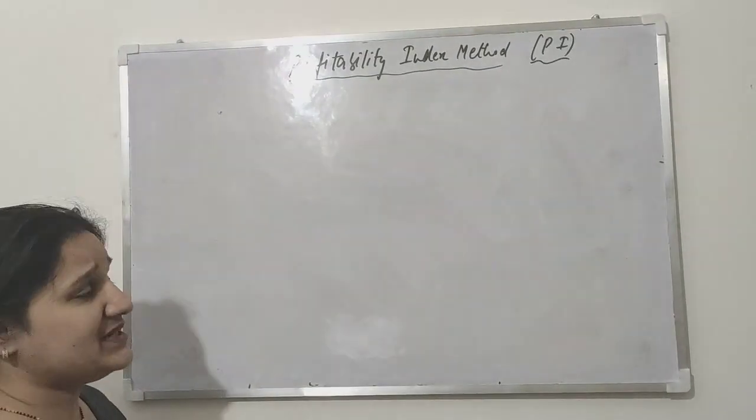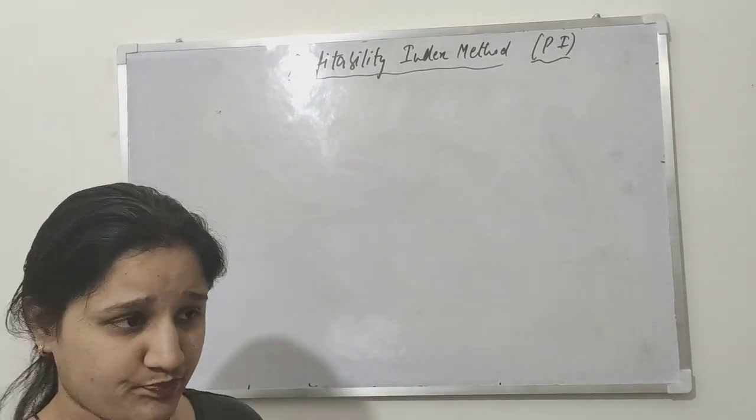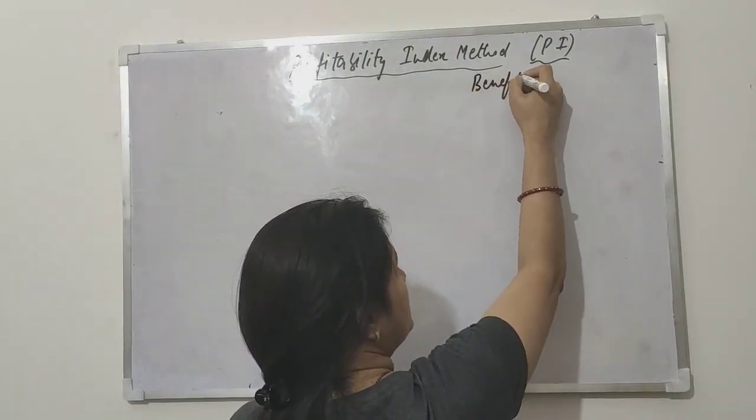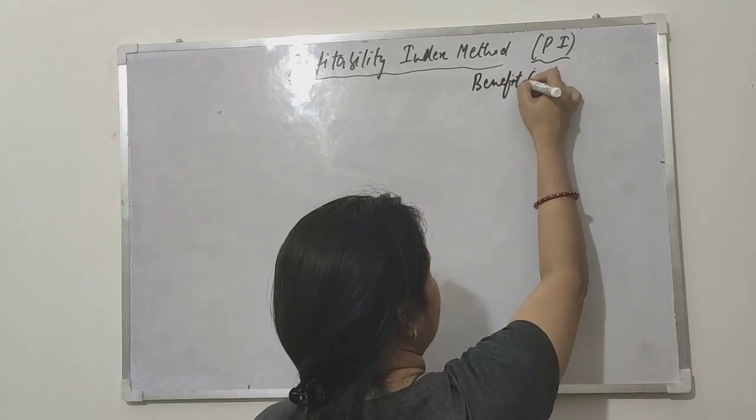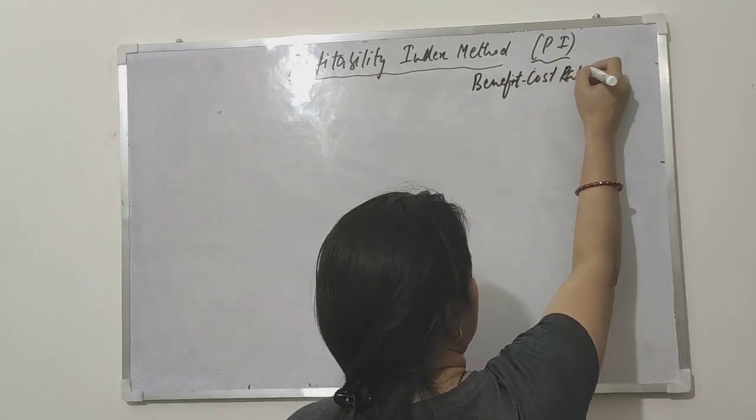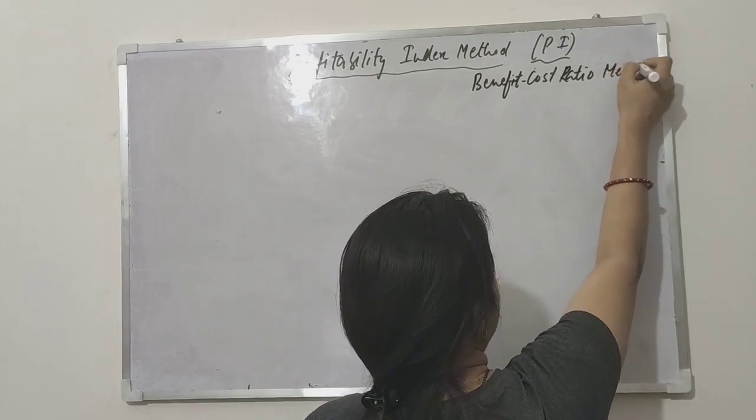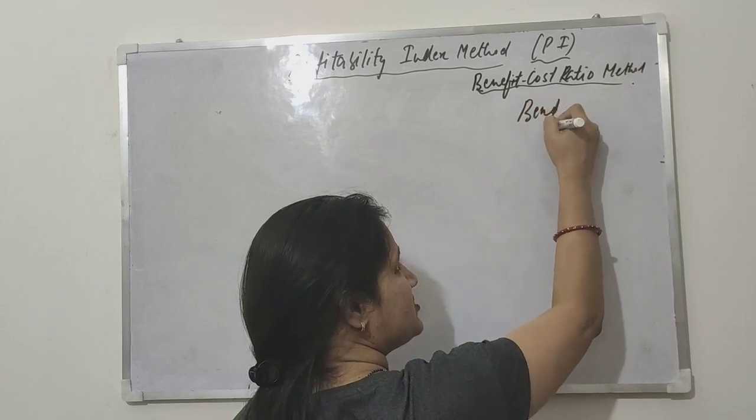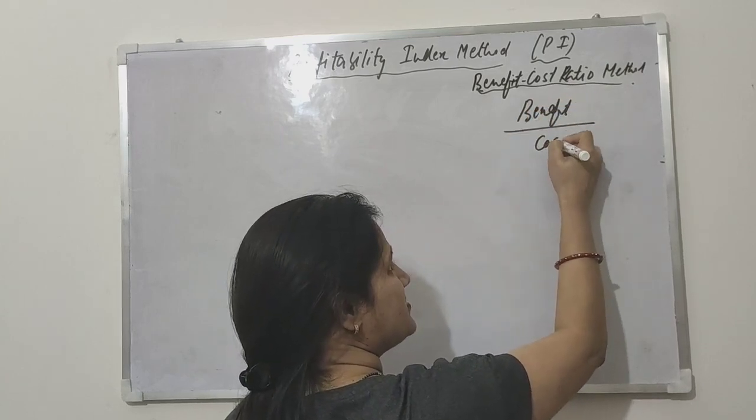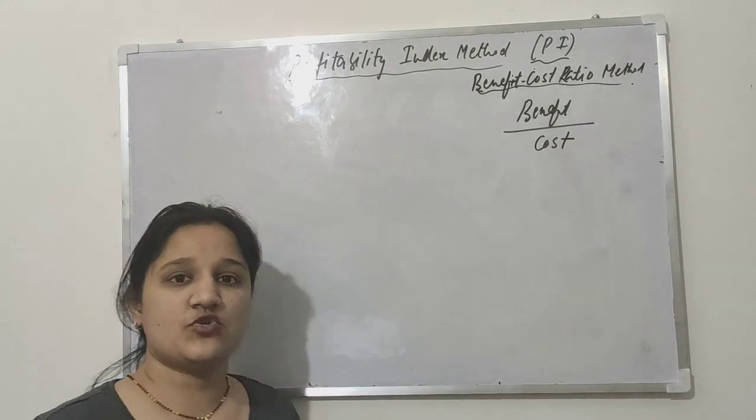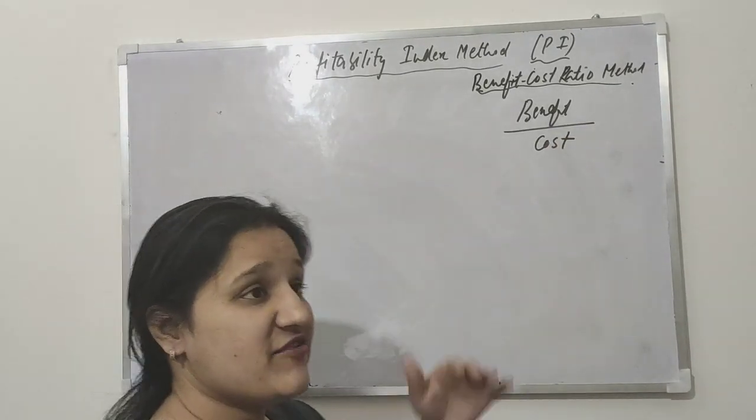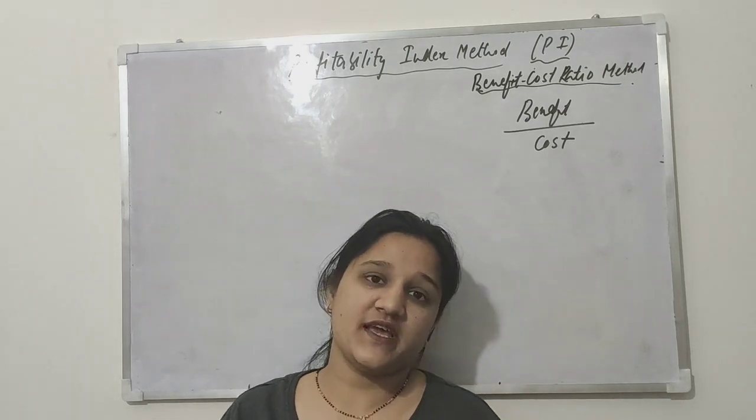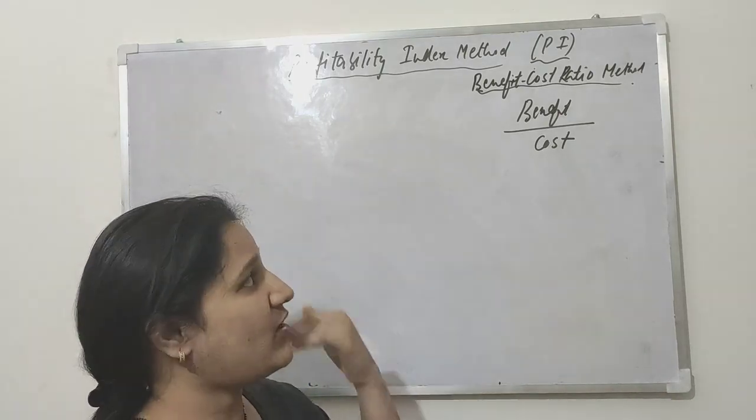Similarly, profitability index, as I told you, the method name is also benefit cost ratio method. As the name is saying, the formula is also this much - that is benefit over cost. The project's benefit over the project's cost, that ratio you will get out of this particular formula.